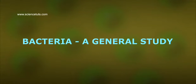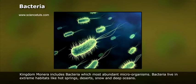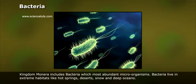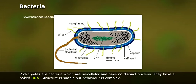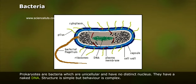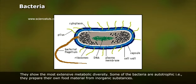Bacteria: a general study. Kingdom Monera includes bacteria, which are the most abundant microorganisms. Bacteria live in extreme habitats like hot springs, deserts, snow, and deep oceans. Prokaryotes are bacteria which are unicellular and have no distinct nucleus. They have a naked DNA. Their structure is simple but behavior is complex.